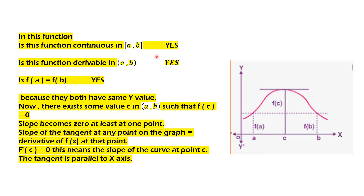Let me repeat. Is the function continuous? Yes. Is the function derivable? Yes. Third condition: f(a) is equal to f(b). f(a) has a certain y-value and f(b) also has the same y-value, so f(a) equals f(b). Three conditions met. There exists some value c in the open interval (a, b) such that f'(c) equals 0. What does f'(c) equals 0 mean? The slope becomes 0 at at least one point. When you draw the tangent to the curve, if it is parallel to the x-axis, the derivative is 0. This is the whole structure of Rolle's theorem.